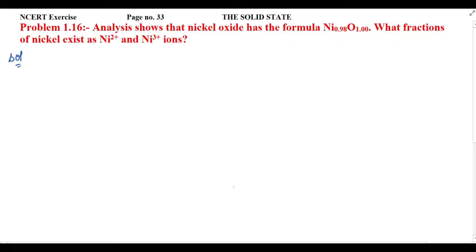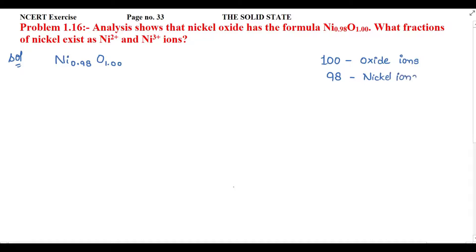Here they have given the fraction of nickel and oxide ions. Nickel exists in 0.98 and oxide in 1.00. In terms of ions, if we consider 100 oxide ions, then with respect to 100 oxide ions, 98 nickel ions are present. That means 98 nickel ions are forming bonds with 100 oxide ions.